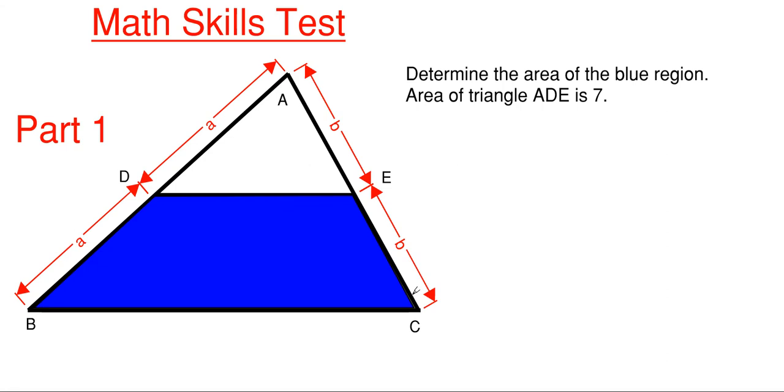Without any given dimensions, we can actually find the blue area pretty quickly. According to what's known as the midsegment theorem, or midline theorem, if all midpoints of each side of a triangle connect, then four congruent triangles will form inside the main triangle.